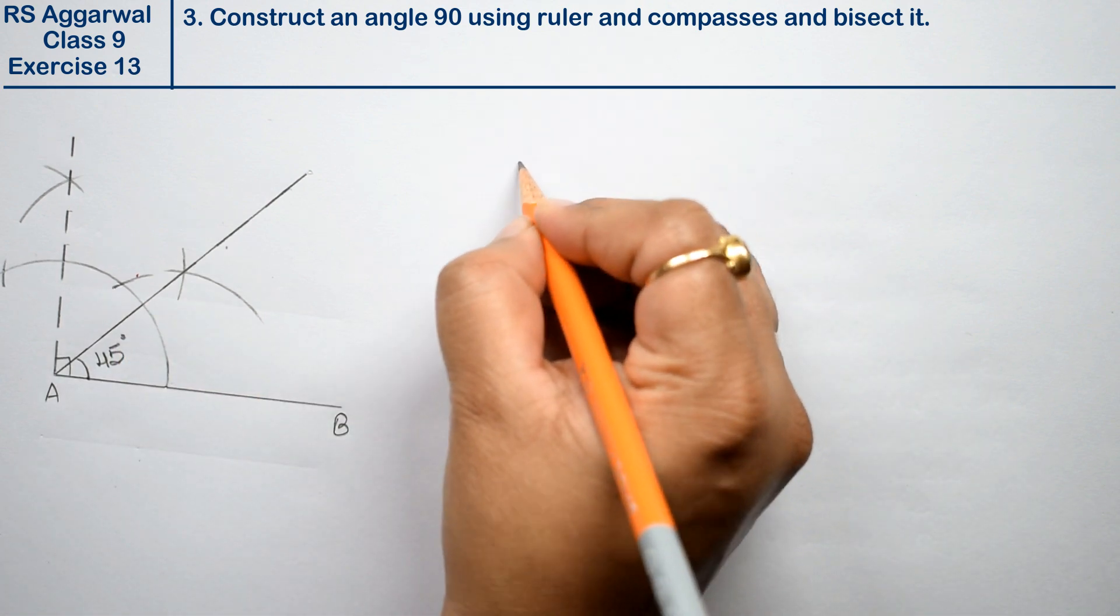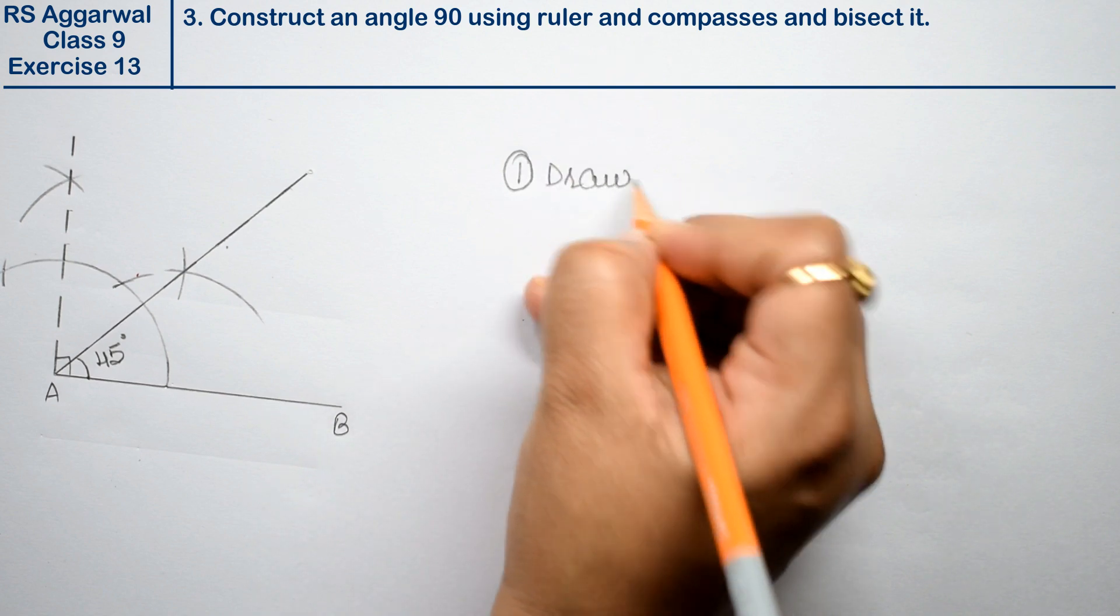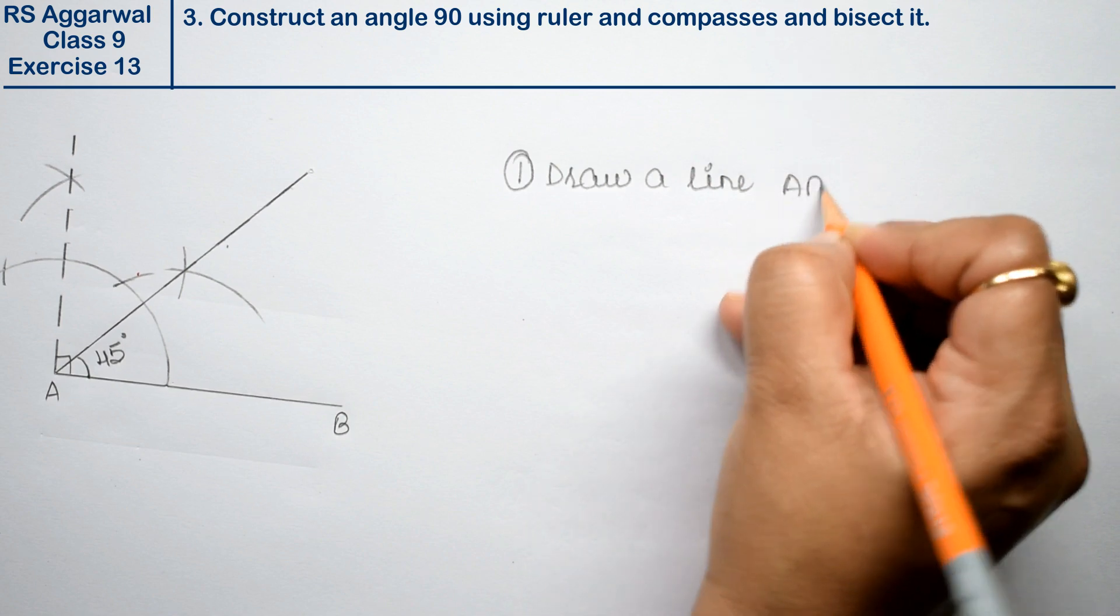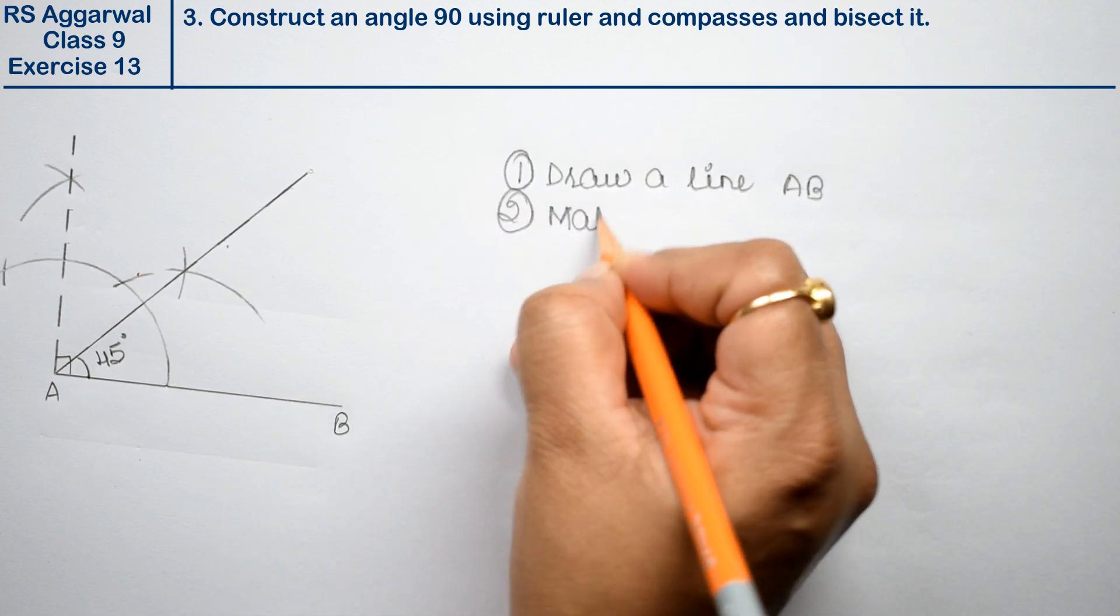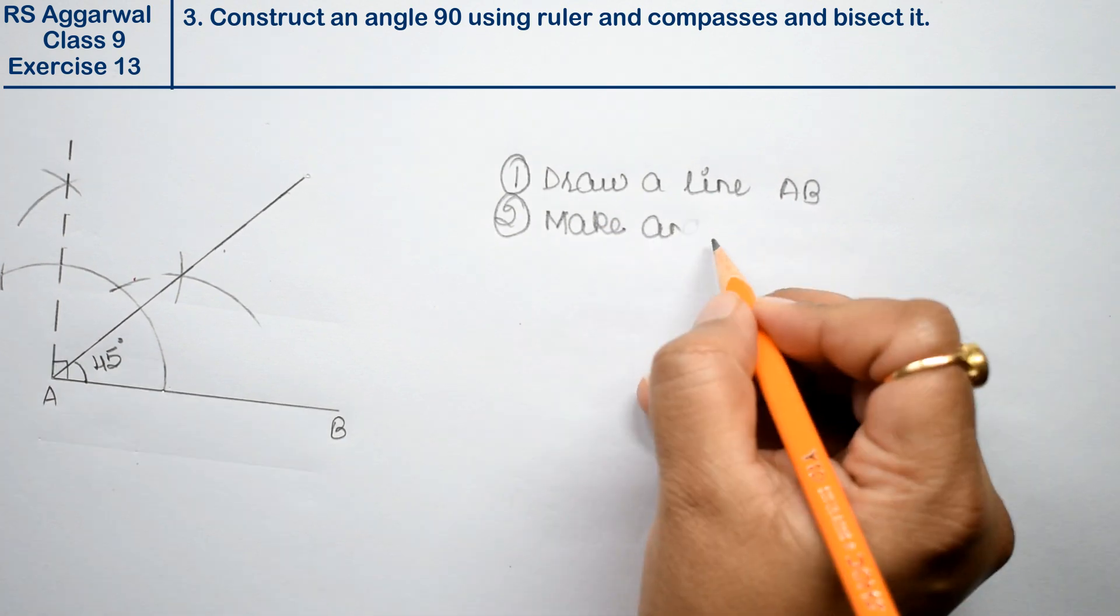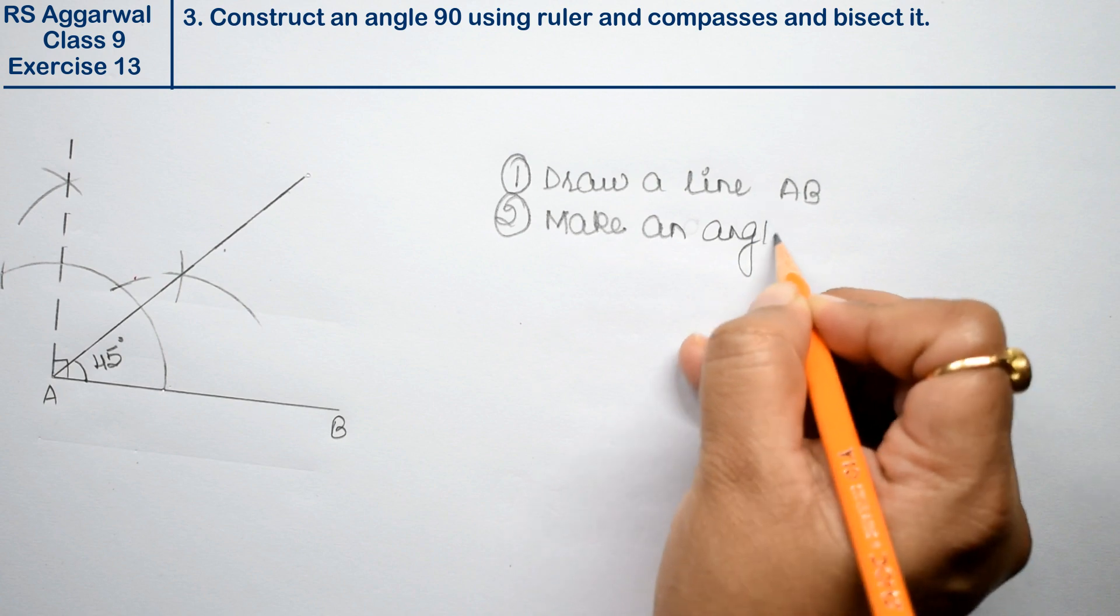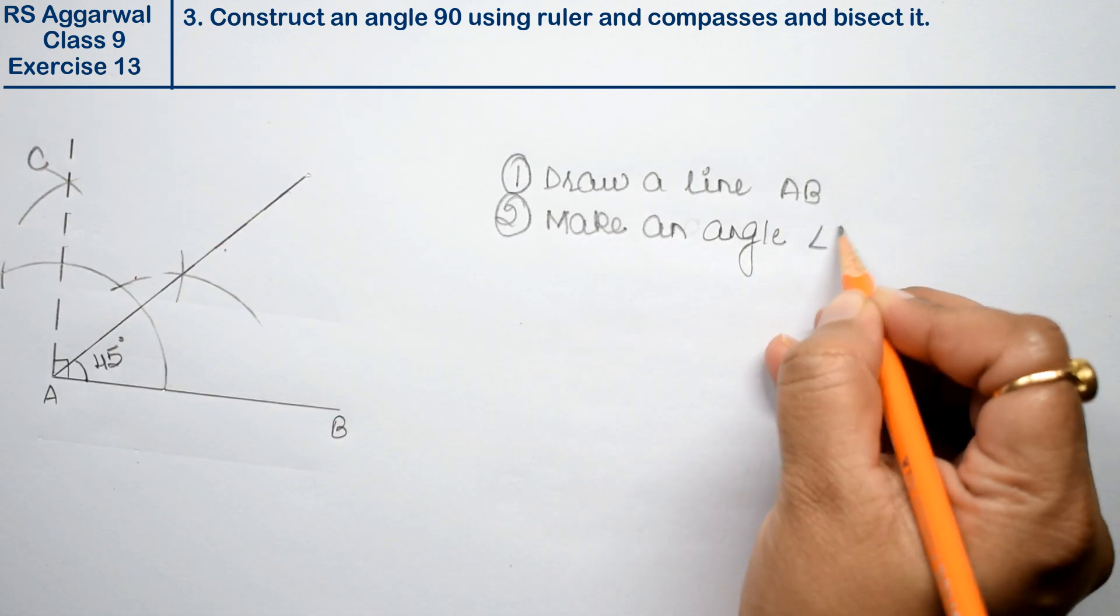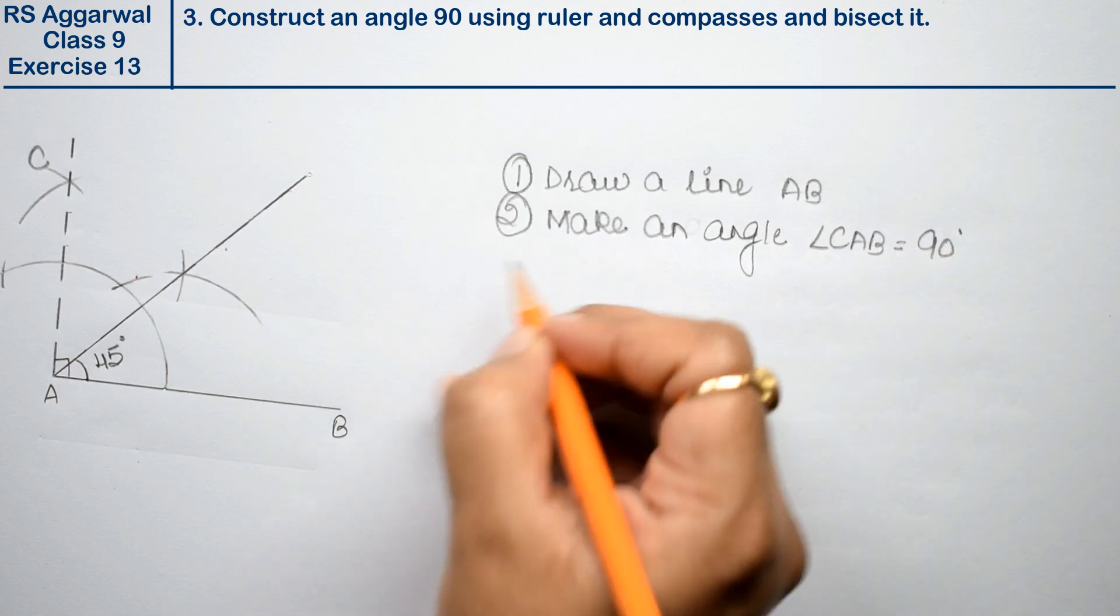What are the steps? Let me write the last step. Draw a line AB. Second, make an angle. This became point C. Angle CAB equals to 90 degrees. Right?